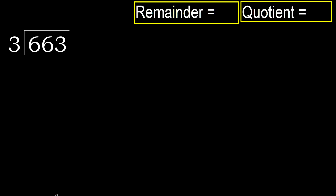663 divided by 3. Starting with 6: 3 multiplied by which number is nearest to 6 but not greater? 3 multiplied by 3 is 9, which is greater.